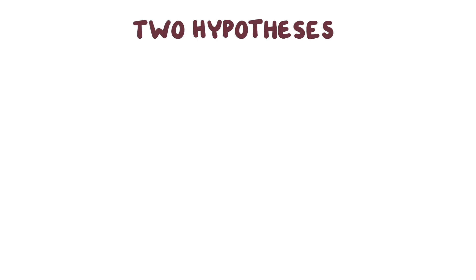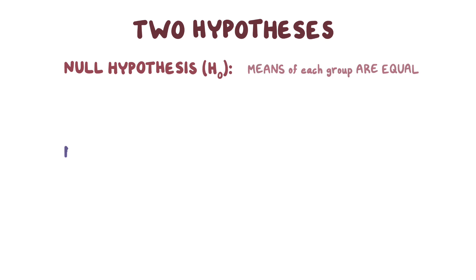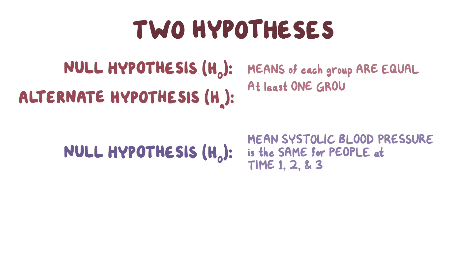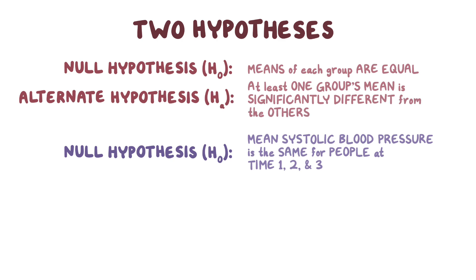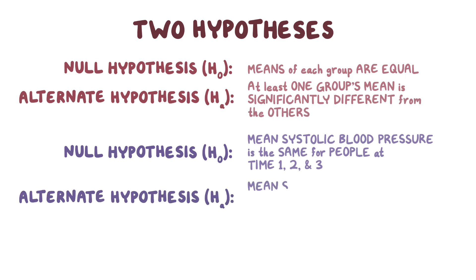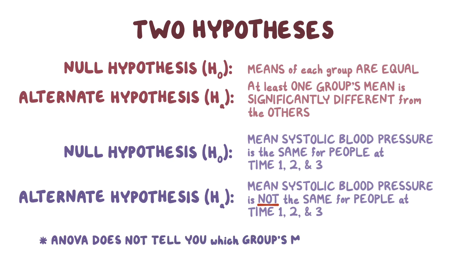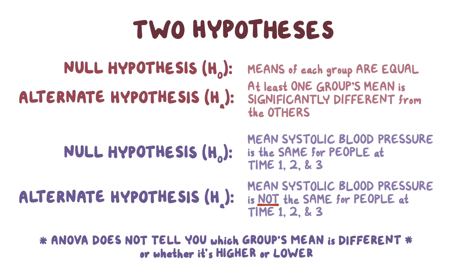A repeated ANOVA test starts with two hypotheses. The first is the null hypothesis, which says that the means of each group are equal — in other words, the mean systolic blood pressure is the same for people at time one, two, and three. The second is the alternate hypothesis, which says that at least one group's mean is significantly different from the others. One important thing to note is that ANOVA doesn't tell you which group's mean is different or whether the mean is higher or lower — it simply tells you that the group means are not equal.